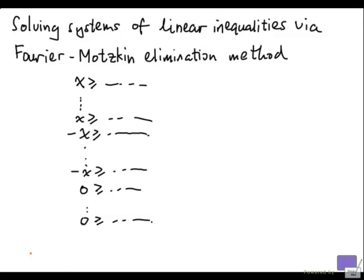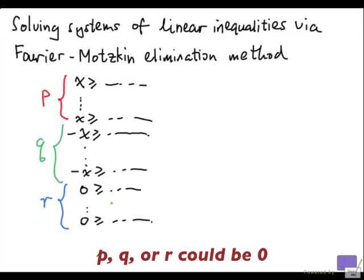So my system looks like this. Say I have p of these constraints at the top, q of these in the middle, and r of these. These r inequalities do not have the variable x. To eliminate x, all we need to do is make sure that each of the lower bounds from one of the p inequalities is at most the upper bound given by one of the q inequalities.